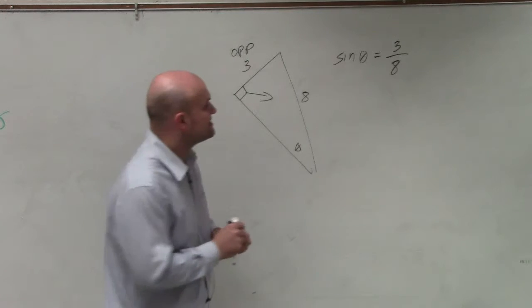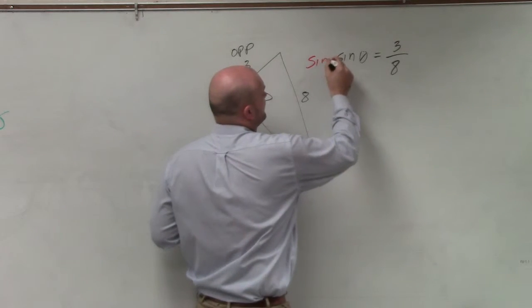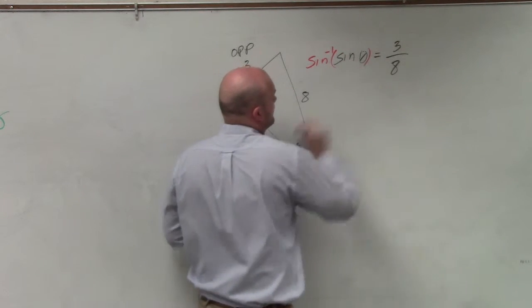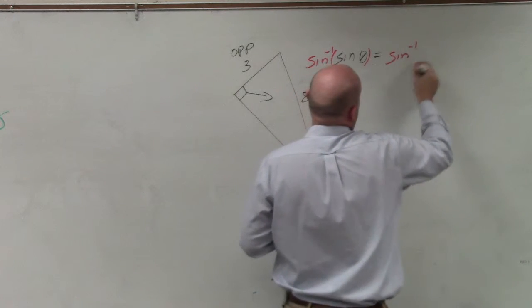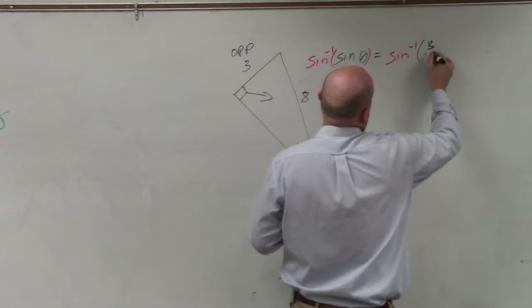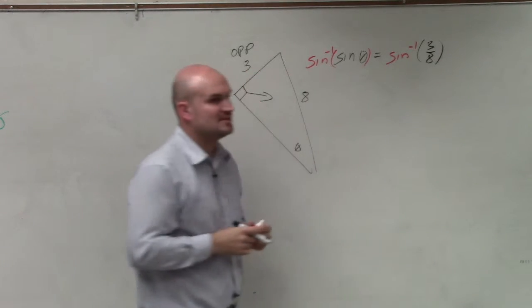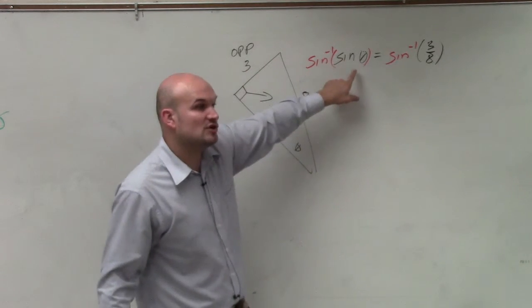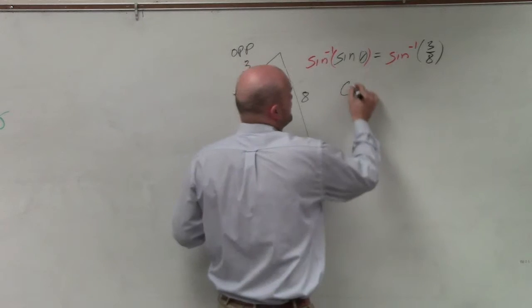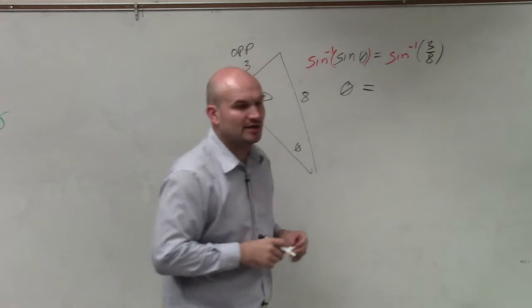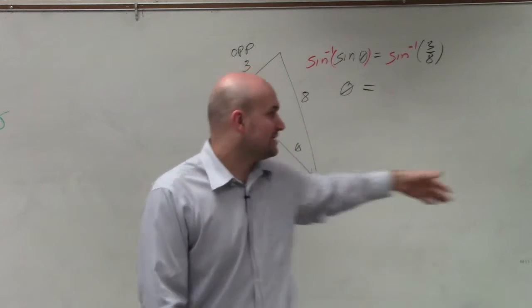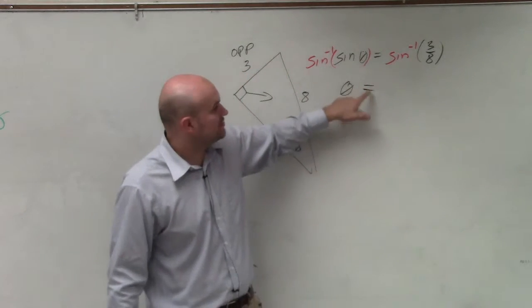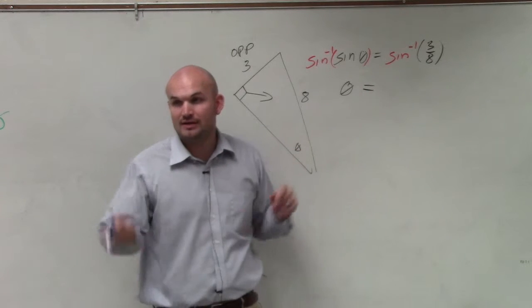The way we undo sine is to take the inverse. So we're going to take the inverse on both sides. So sine inverse of sine is just going to leave us with theta. So now in our calculator, rather than hitting sine of a number, we're now going to hit second sine, which will give us sine inverse of 3 over 8.